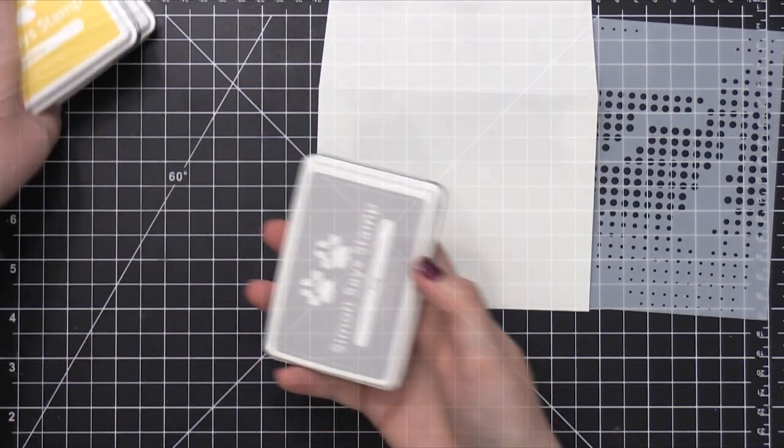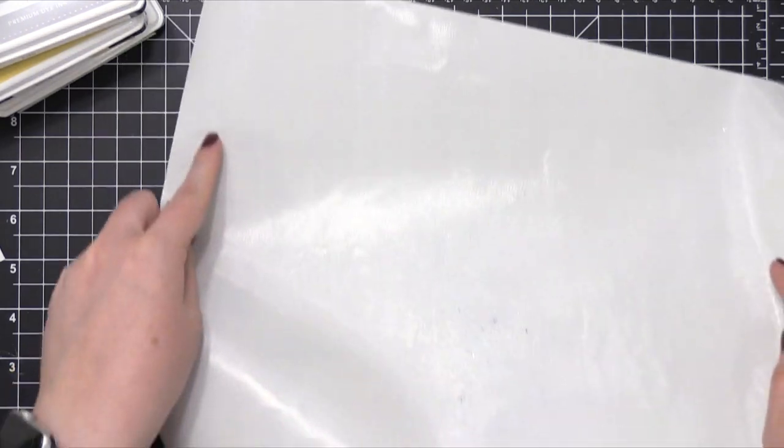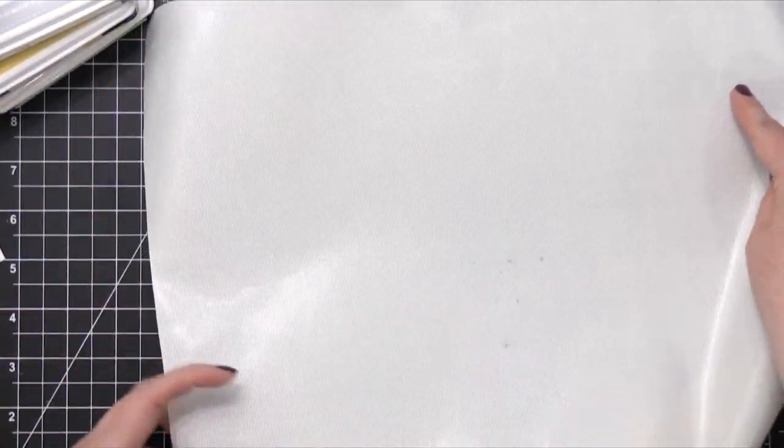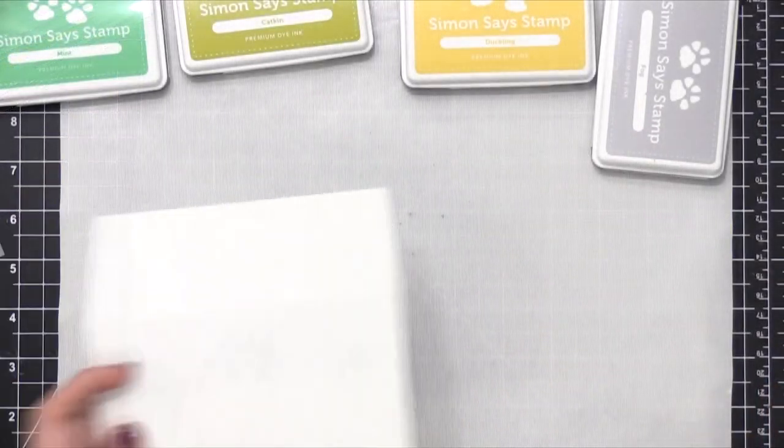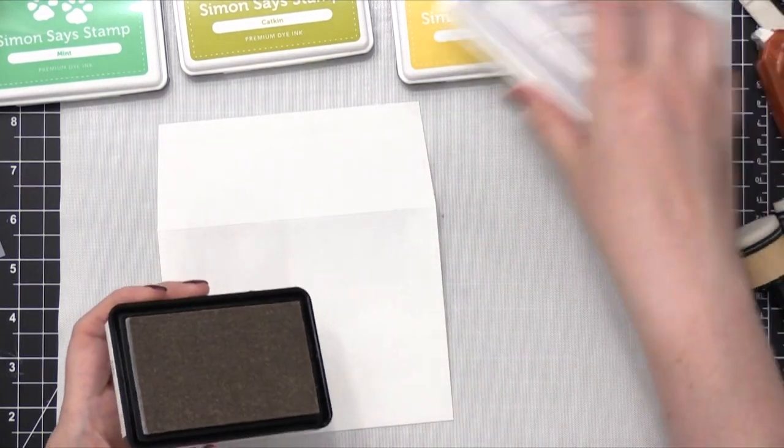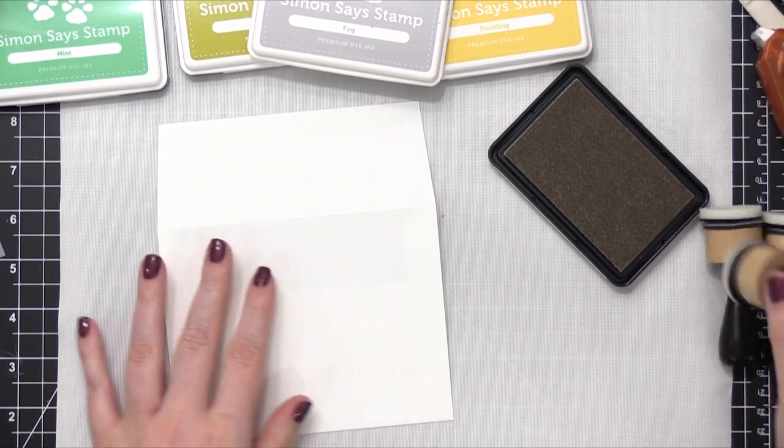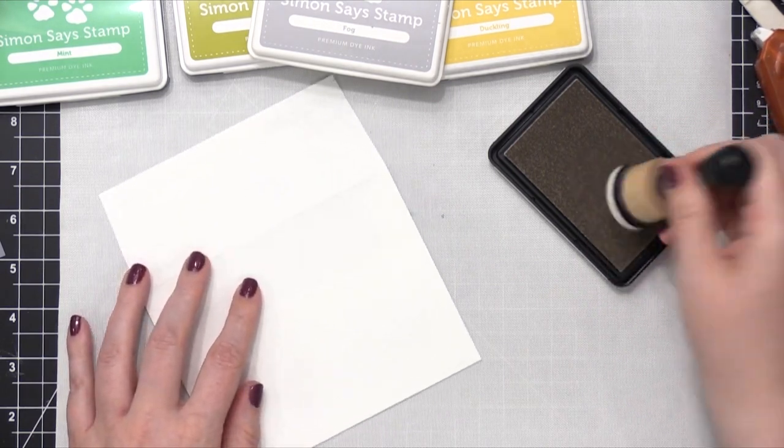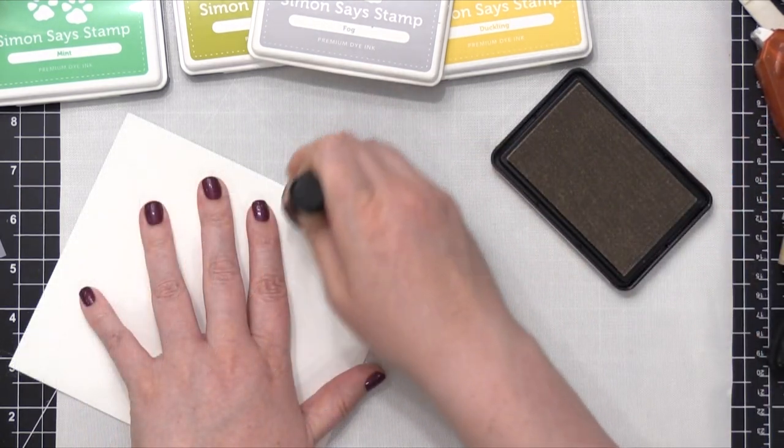So I'm using four different ink colors from Simon as well as the new Tap Dance stencil from Simon. So I put down the Tonic Easy Clean Mat on my surface just to protect it, and it also gives me a slick surface to do some ink blending from, which I find is the easiest way to do ink blending.